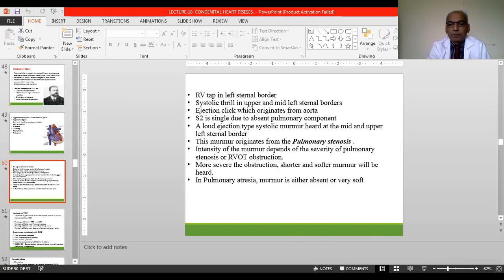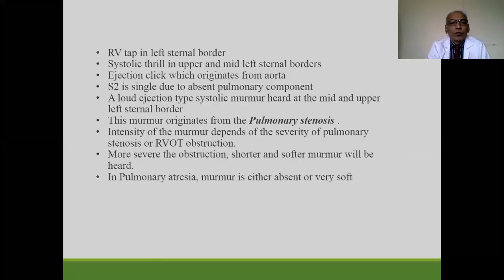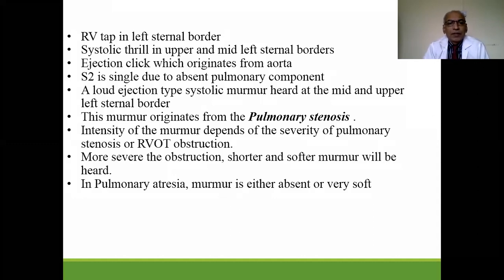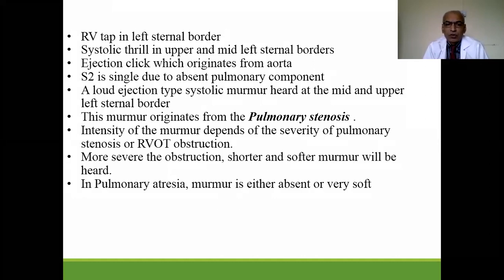On physical examination, there is a right ventricular tapping type of apex beat at the left sternal border, systolic thrill in the upper and mid left sternal border, an ejection click originating from the aorta, a single second heart sound due to absent pulmonary component, and a loud ejection systolic murmur best heard in the middle and upper left sternal border due to pulmonary stenosis.